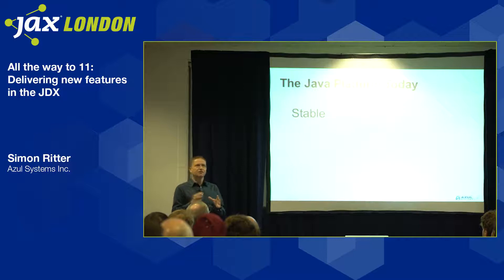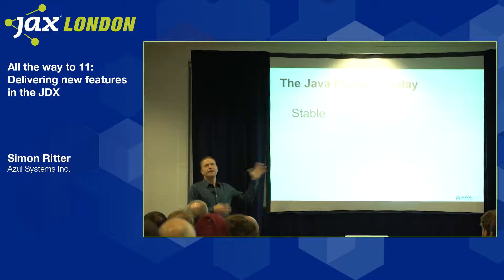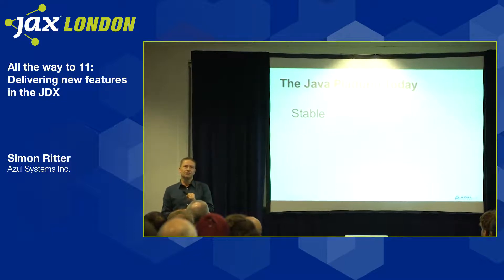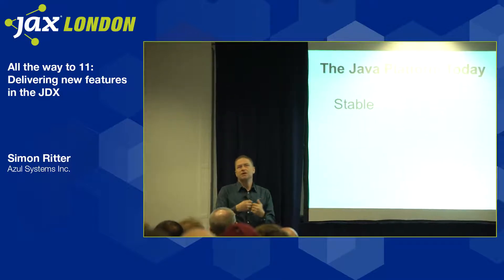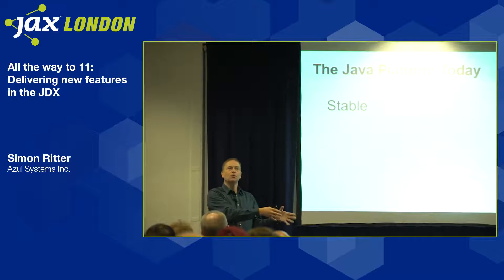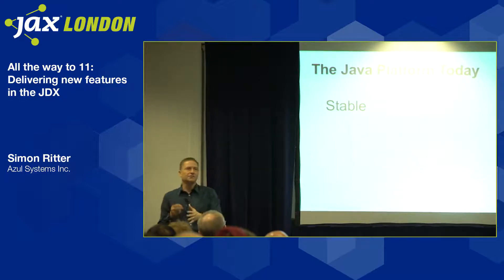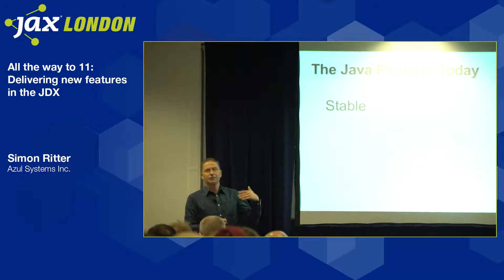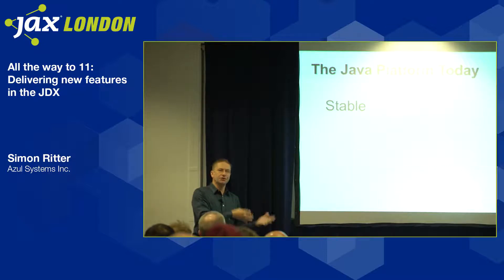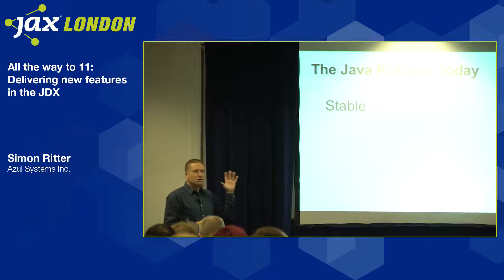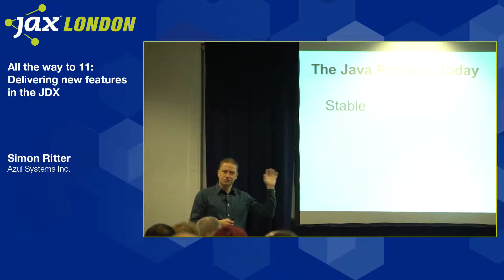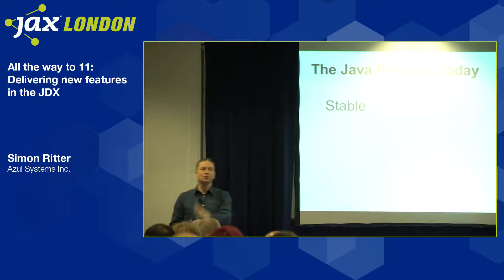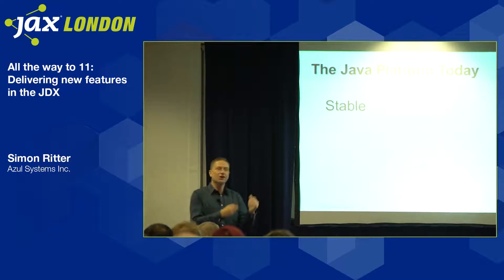Java today can be described with three words. First: stable. When we've moved between versions of Java, we've been fairly assured that code working on one version will work on the next. There have been some breaking changes — JDK 1.4 introduced assertions so you couldn't use 'assert' as a variable name; JDK 5 introduced enumeration so 'enum' couldn't be used — but those were fairly small. Overall, Java has been very stable. You can take applications that worked on version 1.2 and run them on JDK 8 without recompiling much of the time.